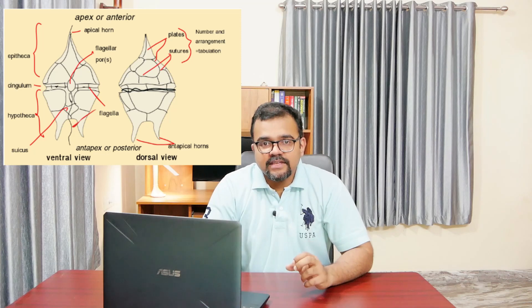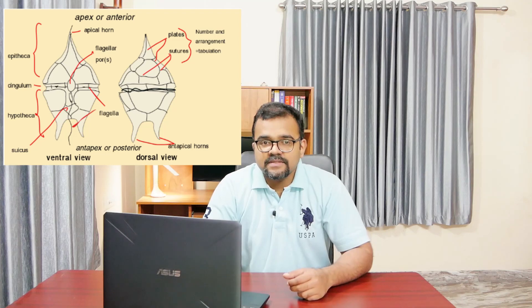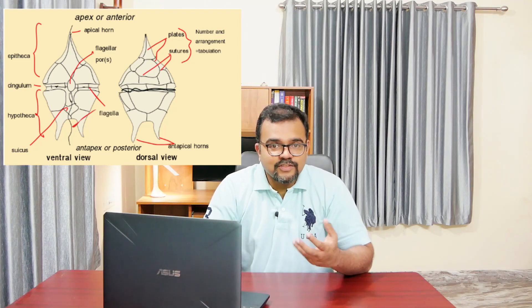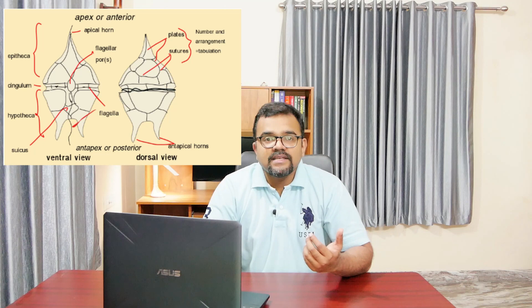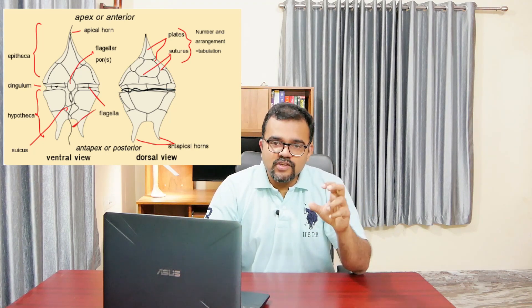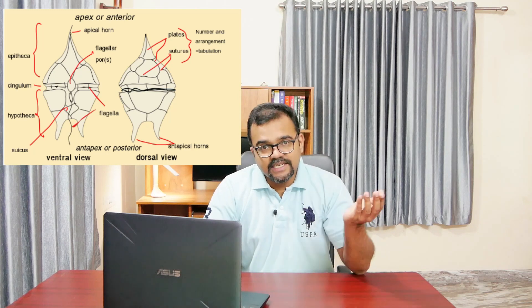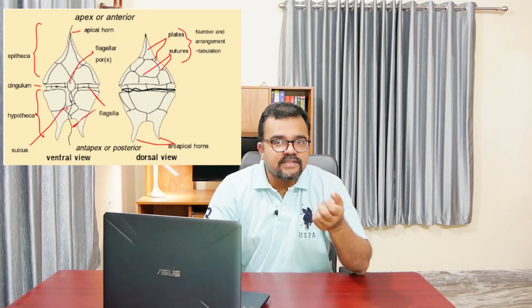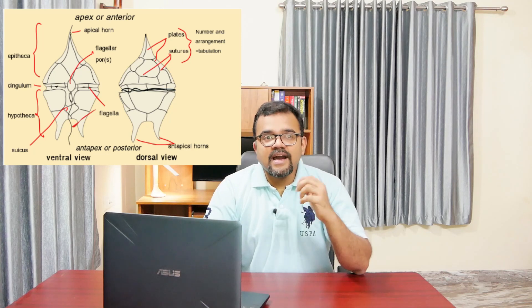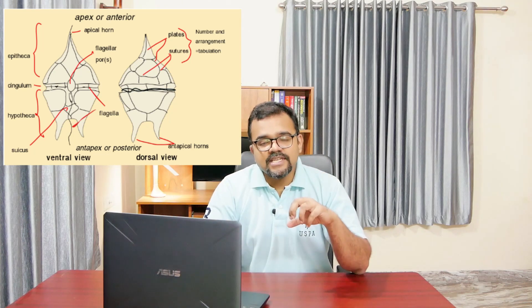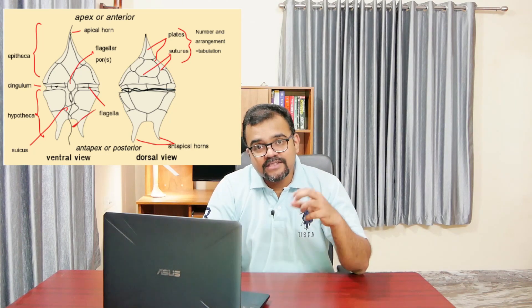Dinoflagellates have a complex skeleton called pellicle which contains cellulose deposits. Dinoflagellates typically have two flagella of unequal length. One flagellum is attached a short distance behind the middle of the body, directed posteriorly, and lies in a longitudinal groove called the sulcus. The other flagellum is transverse and is located in another groove called the cingulum.